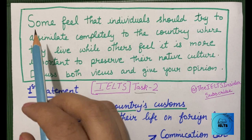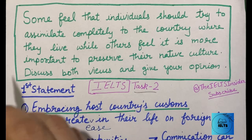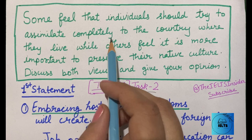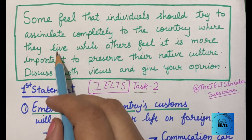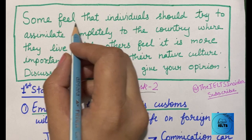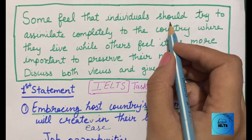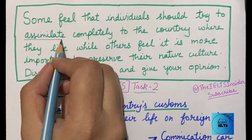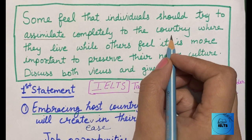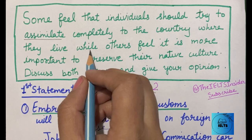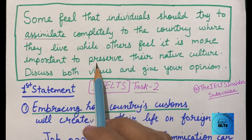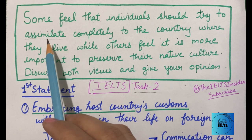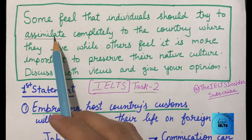So first let's read the question. 'Some feel that individuals should try to assimilate completely to the country where they live.' Kuch logon ko lagta hai ki jo log hain unhe try karna chahiye ki woh assimilate kar lein — assimilate matlab apna lein poori tarah se us country ko jahan woh rahate hain. Yahan immigrants ki baat ho rahi hai — immigrants matlab woh log jo apni country ko chhod ke bahar gaye hain.